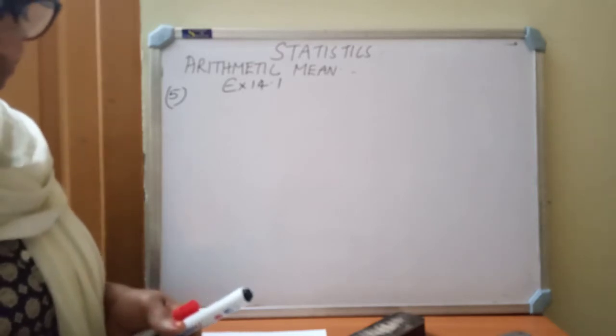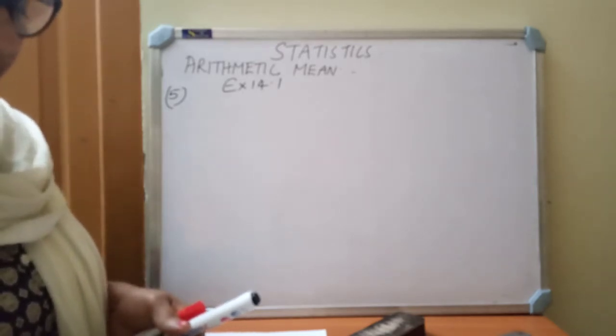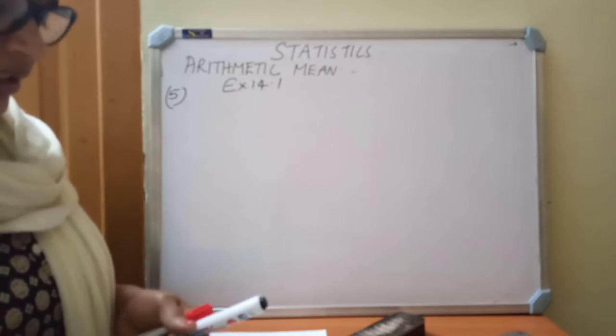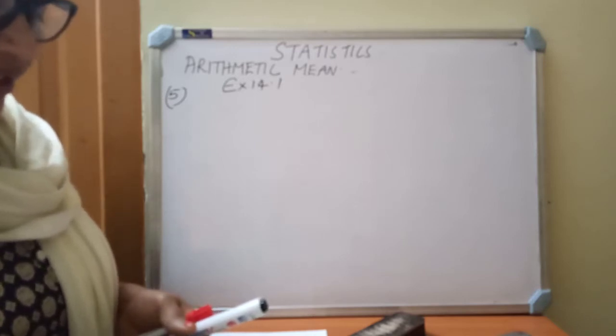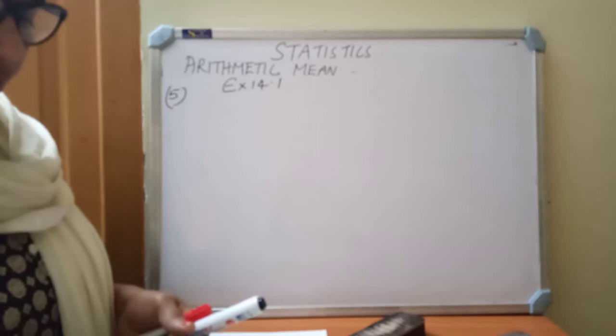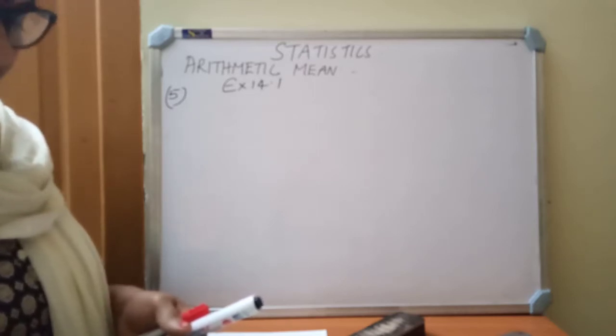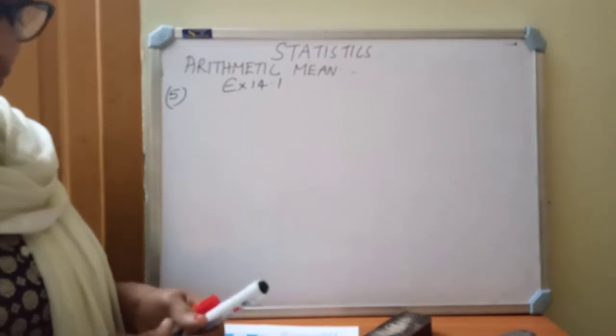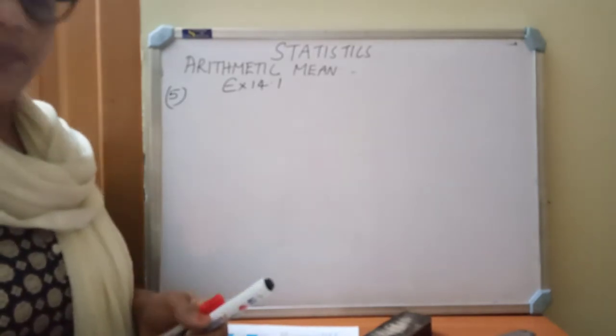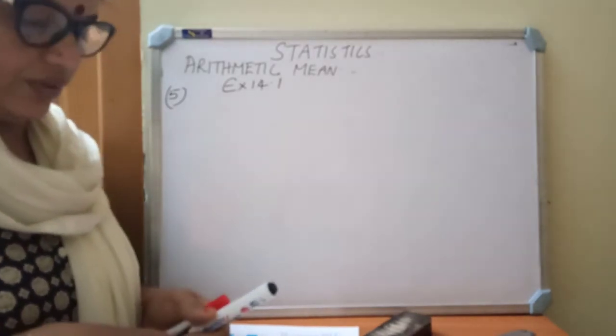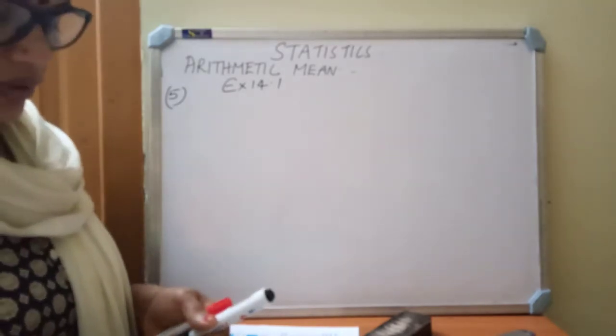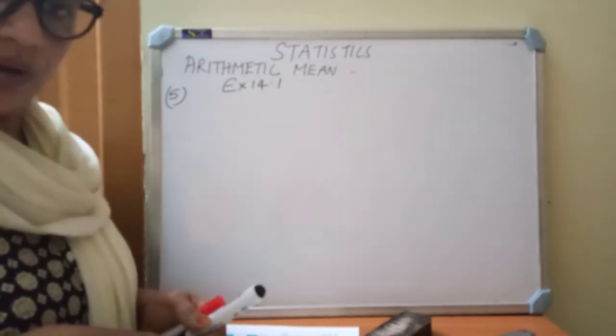In a retail market, fruit vendors were selling mangoes kept in packing boxes. These boxes contain varying number of mangoes. The following was the distribution of mangoes according to the number of boxes.